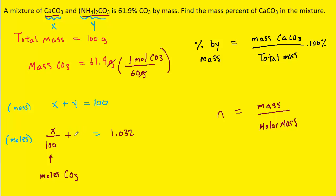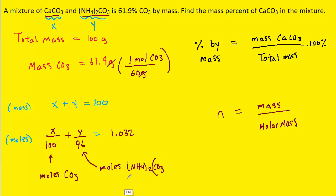We set up a similar expression for the moles of carbonate from ammonium carbonate. The mass of that compound is y, and its molar mass is approximately 96, so the expression is y over 96. Looking at the formula, one mole of ammonium carbonate also produces one mole of carbonate — it's a one-to-one ratio — so this expression gives us the moles of carbonate from that compound as well.